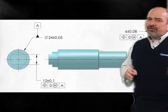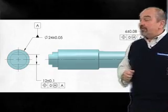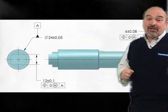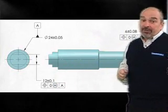If you do not want to require this relationship, you have to add the abbreviation separate requirements or SEP REQT under each of the position tolerances. Doing this will help keep the cost down.